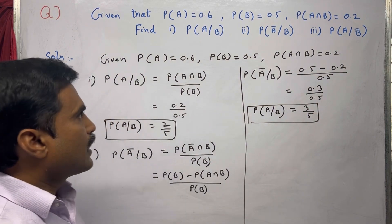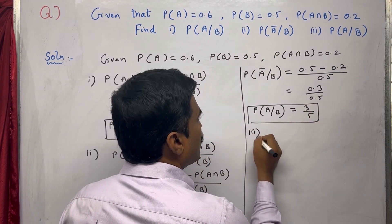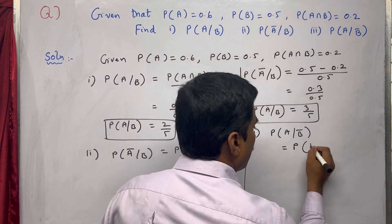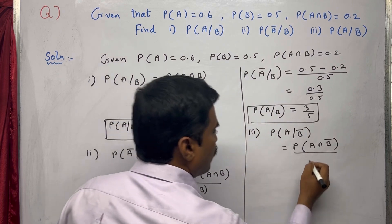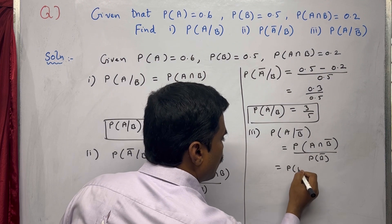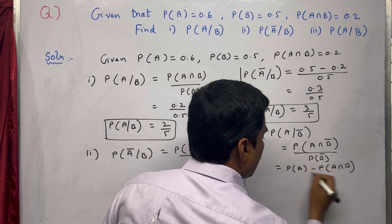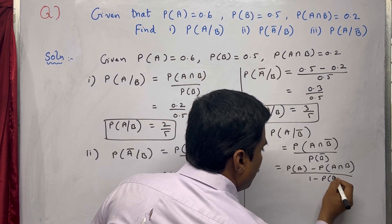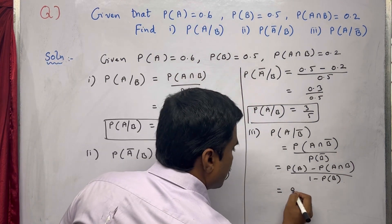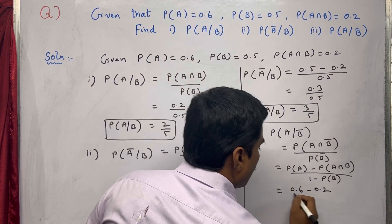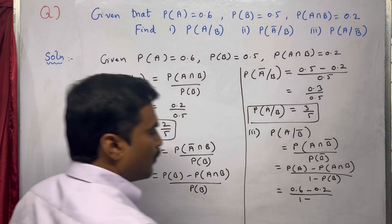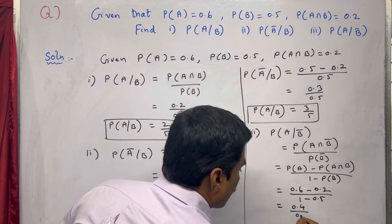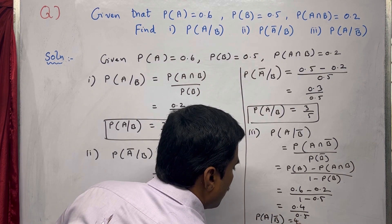So that is the second one completed. Now the third one is P(A|B̄). Again using the conditional probability definition, we write this as P(A∩B̄) / P(B̄), which equals P(A) - P(A∩B) divided by 1 - P(B). Substituting: (0.6 - 0.2) / (1 - 0.5) = 0.4 / 0.5. Therefore P(A|B̄) = 4/5.